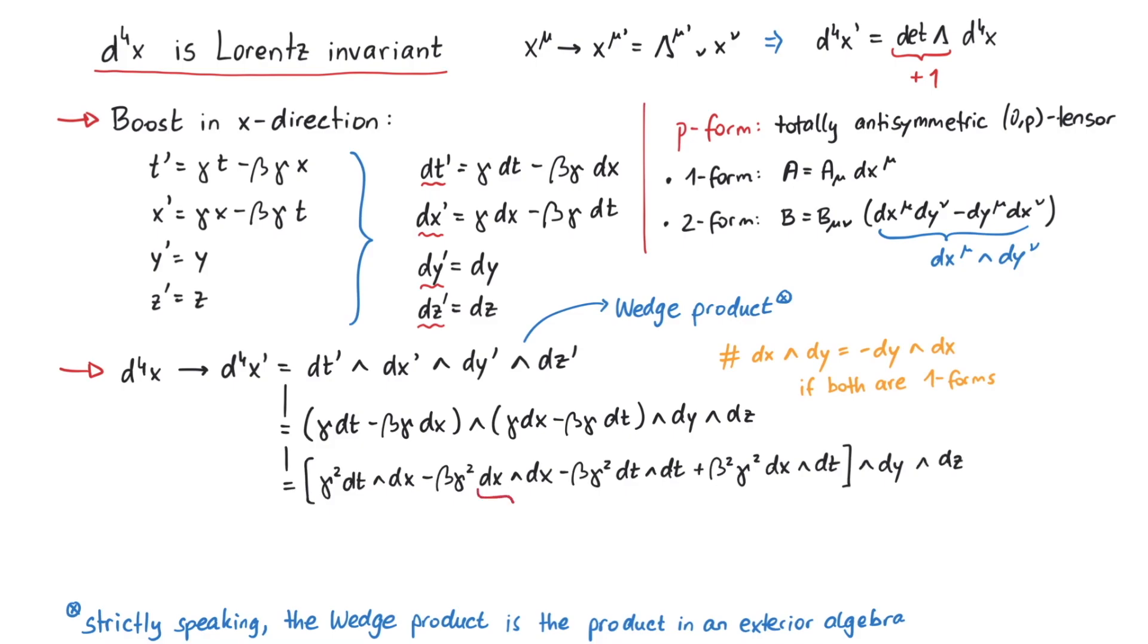Now dx wedge dx must be 0, since this stands for dx dx minus dx dx. Same for dt wedge dt. And for the last term, we can exchange dt and dx by adding a minus sign. Now we get the factor gamma squared minus beta squared gamma squared, which fortunately simplifies to 1.